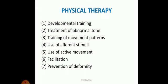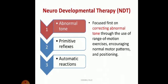Now let us start with the first approach — Neurodevelopmental Therapy, commonly abbreviated as NDT, also known as the Bobath approach. The NDT approach mainly focuses on three parameters: abnormal tone, primitive reflexes, and automatic reactions.